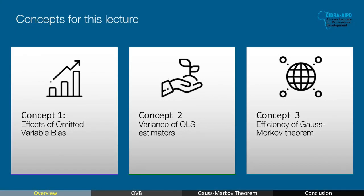We will go into the details of how a variable can take up effects of the omitted variable and compute the omitted variable bias. We'll talk about the variances and effects the data has on variances, and how to identify unstable variances. Then we will walk through the Gauss-Markov theorem and its proof.